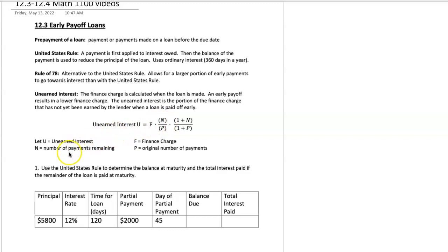N stands for the number of payments remaining, the number of payments that you aren't going to have to pay because you're paying early. And P stands for the number of original payments. Let's get started.